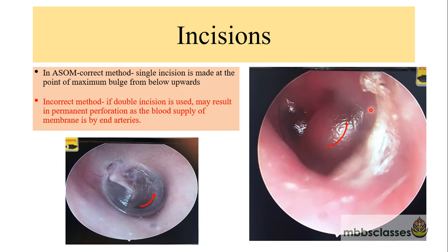Mostly the incision is made at the point of maximum bulging. As you can see here, this is the tympanic membrane of a patient in the suppurative stage of acute suppurative otitis media. The tympanic membrane is totally bulged in the posterior inferior quadrant and is totally congested. The Myringotomy incision will be curvilinear and is usually given at the point of maximum bulge.